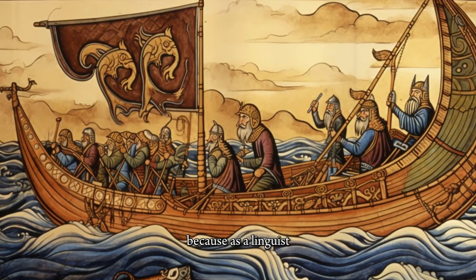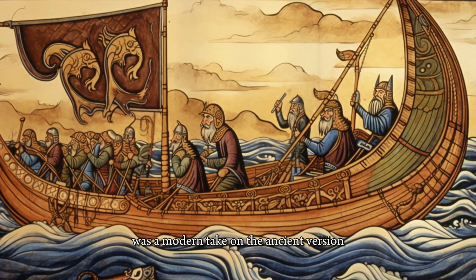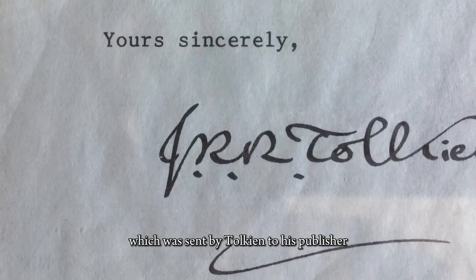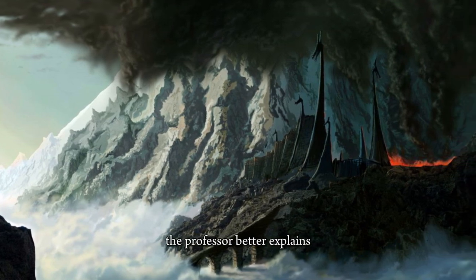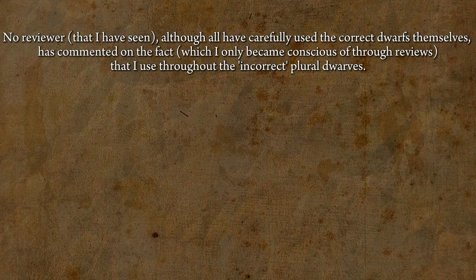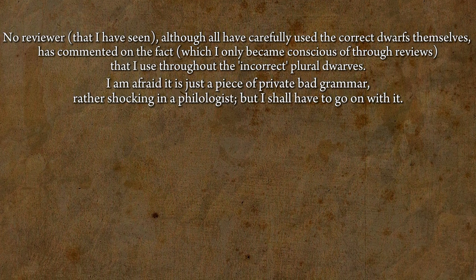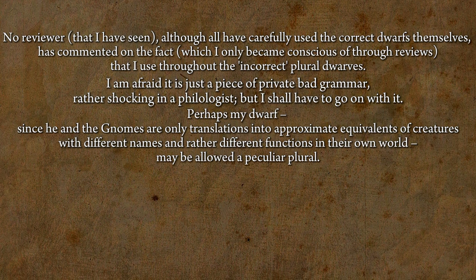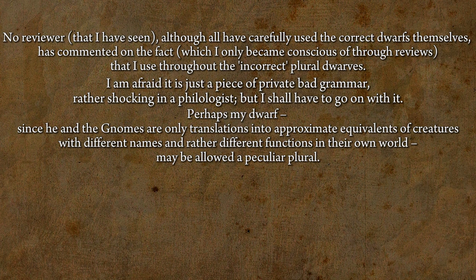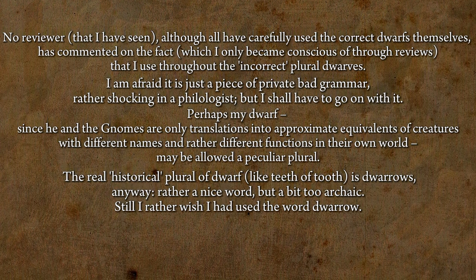But why dwarves specifically? Because, as a linguist and a professor of English, Tolkien was deeply immersed in the Anglo-Saxon language, and so his version of the word was a modern take on the ancient version of the original word, Dweorgas. In letter 17, sent by Tolkien to his publisher Stanley Unwin on the 15th of October 1937, the professor better explains his use of the word. Tolkien said, and I quote: 'No reviewer, although all have carefully used the correct dwarfs themselves, has commented on the fact that I used throughout the incorrect plural dwarves. I am afraid it is just a piece of private bad grammar, rather shocking in a philologist, but I shall have to go on with it. Perhaps my dwarf, since he and the gnomes are only translations into approximate equivalents of creatures with different names and rather different functions in their own world, may be allowed a peculiar plural. The real historical plural of dwarf is dwarrows anyway. Rather a nice word, but a bit too archaic. Still, I rather wish I had used the word dwarrow.'